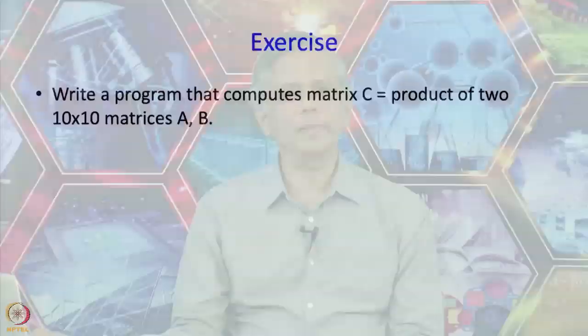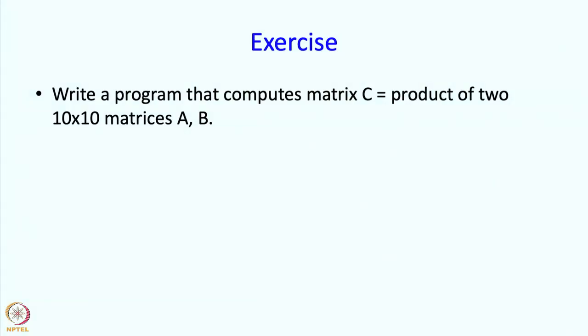As an exercise in two-dimensional arrays, write a program which multiplies two matrices A and B and computes their product in a matrix C. You may remember the formula for matrix multiplication: C[i][j] equals the sum over k of A[i][k] times B[k][j].